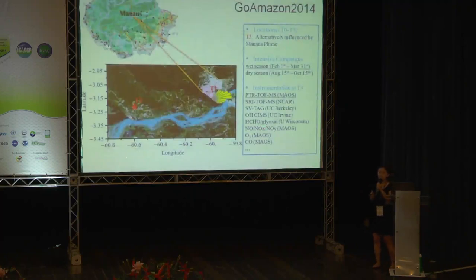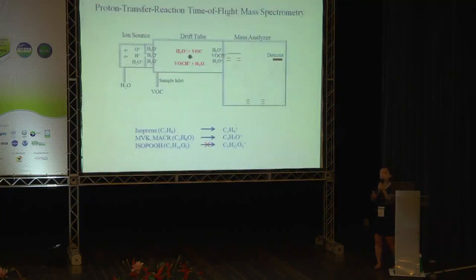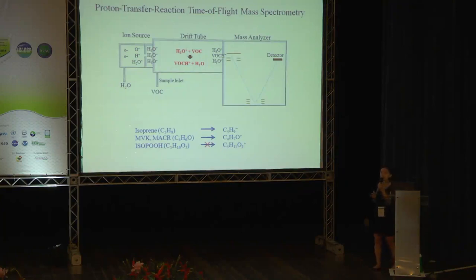There have been a lot of instruments employed at the T3 site, which will be very useful to address the isoprene photochemistry question. For today, I am going to focus on the PTR-ToF-MS I am operating. PTR-ToF-MS stands for proton transfer reaction time-of-flight mass spectrometry. It is a chemical ionization mass spectrometry technique using hydronium ion as a reagent ion. For most VOCs, the proton transfer reaction will occur — for example, isoprene and MVK/MACR will form protonated ions.